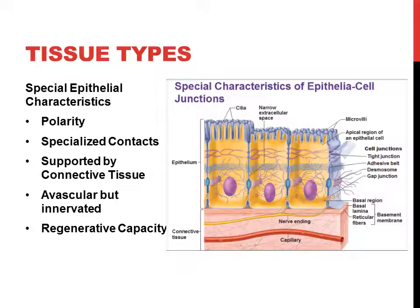Epithelial tissue is innervated — there is a nerve supply. For example, glands have a nerve supply so they know when to release things. Lastly, epithelial tissue has a regenerative capacity. If damage is done to the cells, as long as there is adequate nutrition from the underlying blood supply in the connective tissue, epithelial tissues can regenerate and will continue to divide.